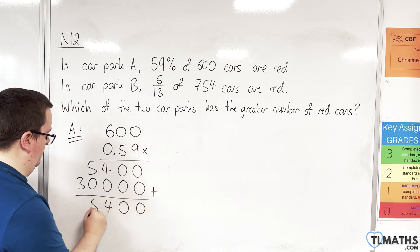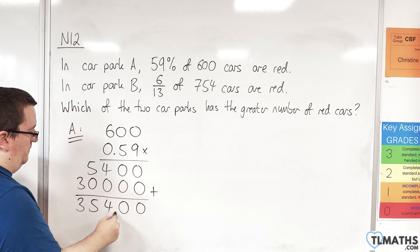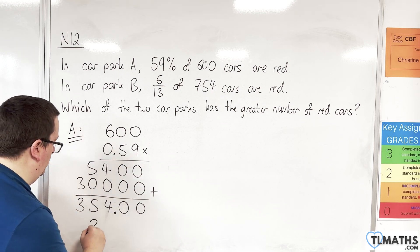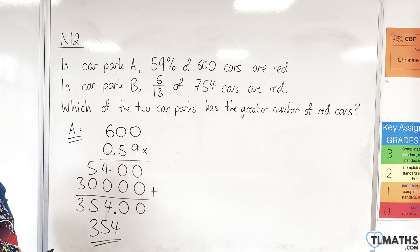Put those two together. 0, 0, 4, 5, 3. We've got two numbers to the right of the decimal point, so we're looking at 354. There are 354 red cars in car park A.